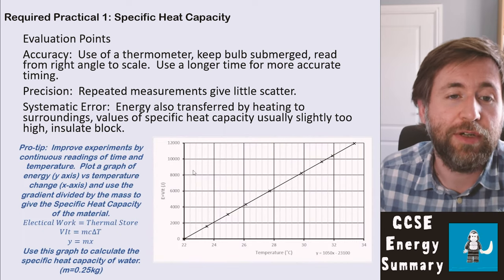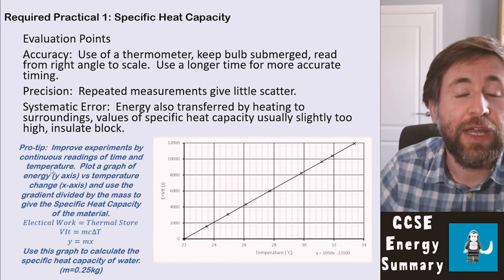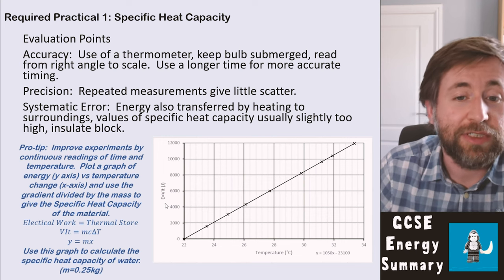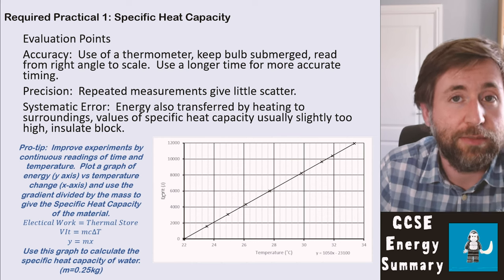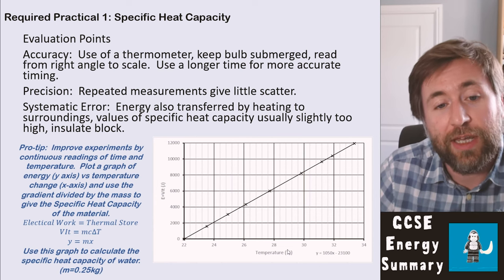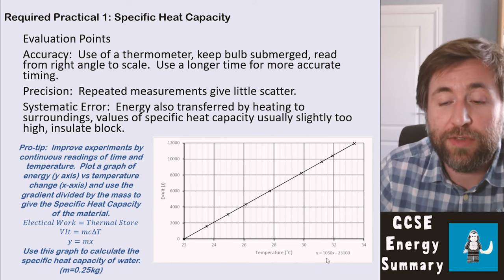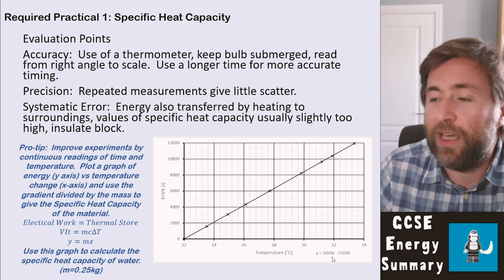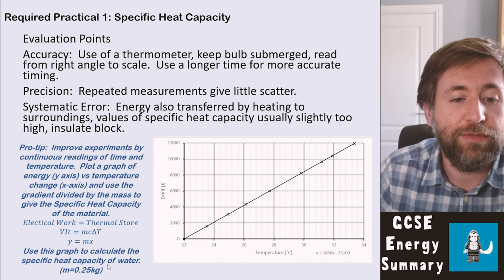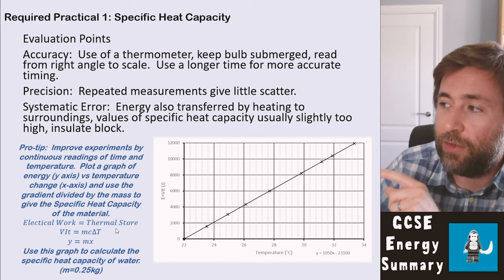One way to improve this practical is to plot a graph by taking continuous readings of time and temperature — every minute or so. Calculate the energy transferred at each point as E = V × I × t, plot energy on the y-axis and temperature on the x-axis. The gradient of that graph equals mc (mass × specific heat capacity). For example, if the gradient is 1050, divide by the mass (say 0.25 kg) to give you c, the specific heat capacity. This is a high-order skill for GCSE, but they could ask you to do this.